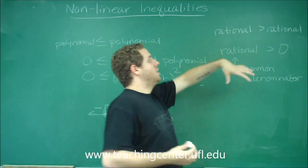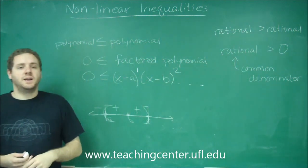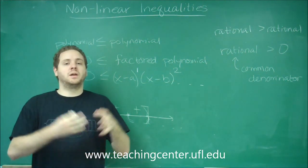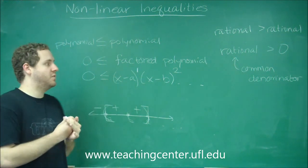So you still want to subtract it over. You still want to get zero on one side, but you have to get a common denominator and combine it all into one big rational function.